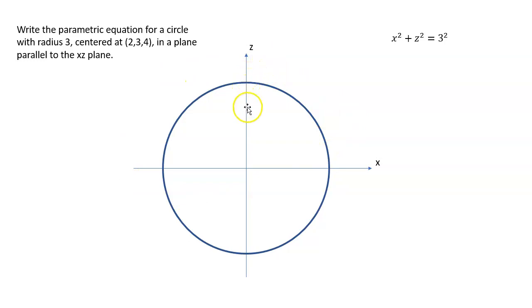Now normally you might think, oh, I would write the equation as x squared plus z squared equals radius squared, 3 squared. And that works fine for a standard equation in 2D, but for 3D we're going to need to parametrize this equation.